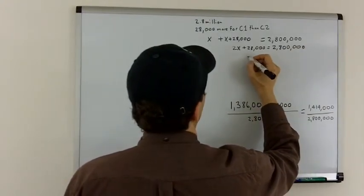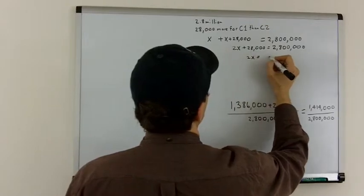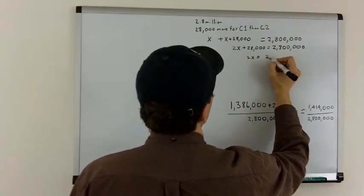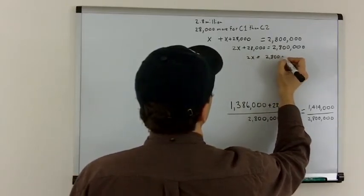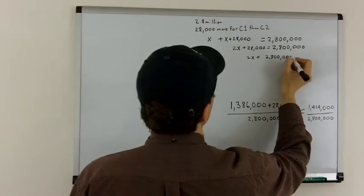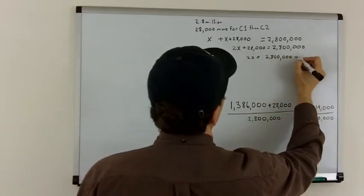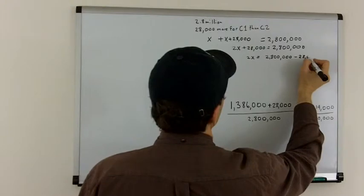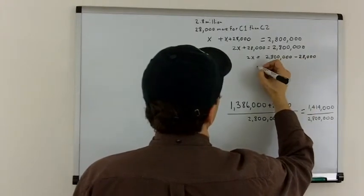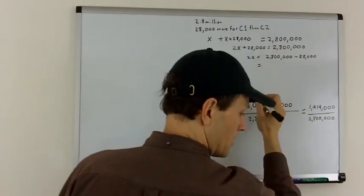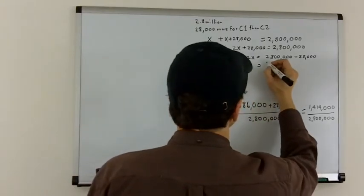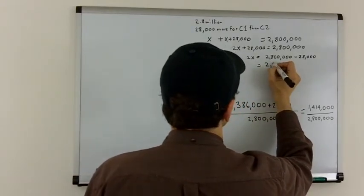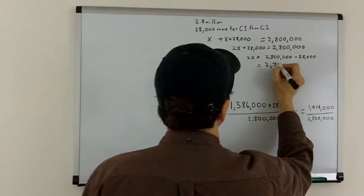So, 2X equals 2,800,000 minus 28,000, which is equal to 2,700,000.